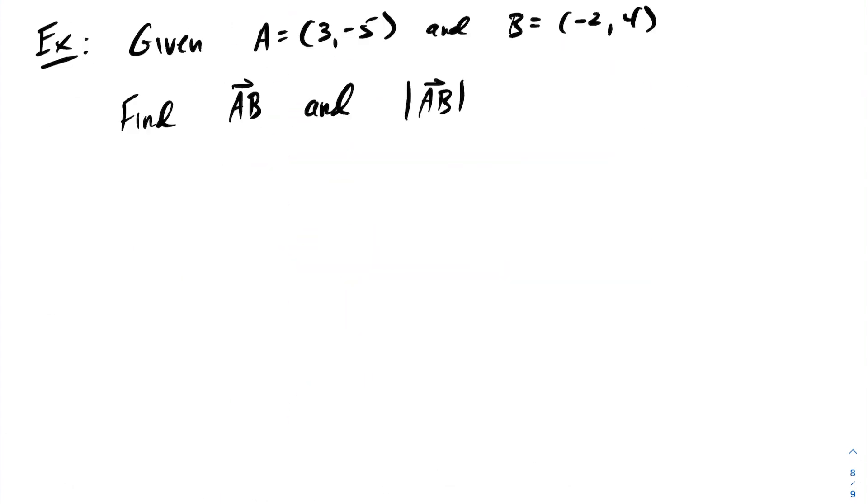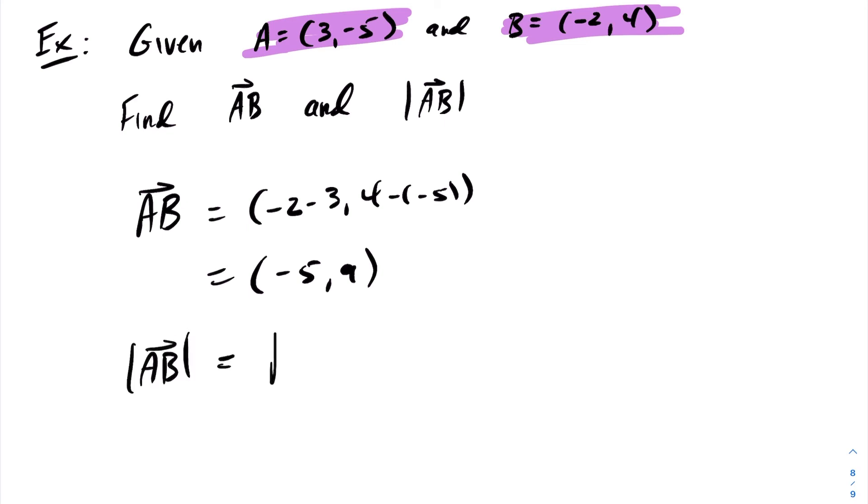Let's take a look at an example. We have the point (3,5) and the point (-2,4). We want to construct a vector going from point A to point B. First, we know vector AB will be -2 minus 3, and 4 minus -5, which gives us (-5,9). Therefore, the length of vector AB will be the square root of (-5)² plus 9², which is 25 plus 81, which is the square root of 106.